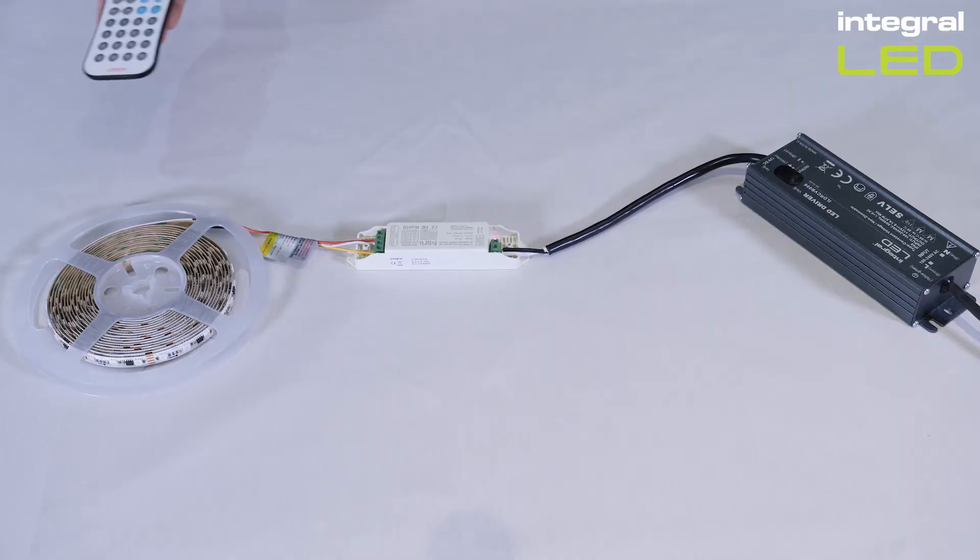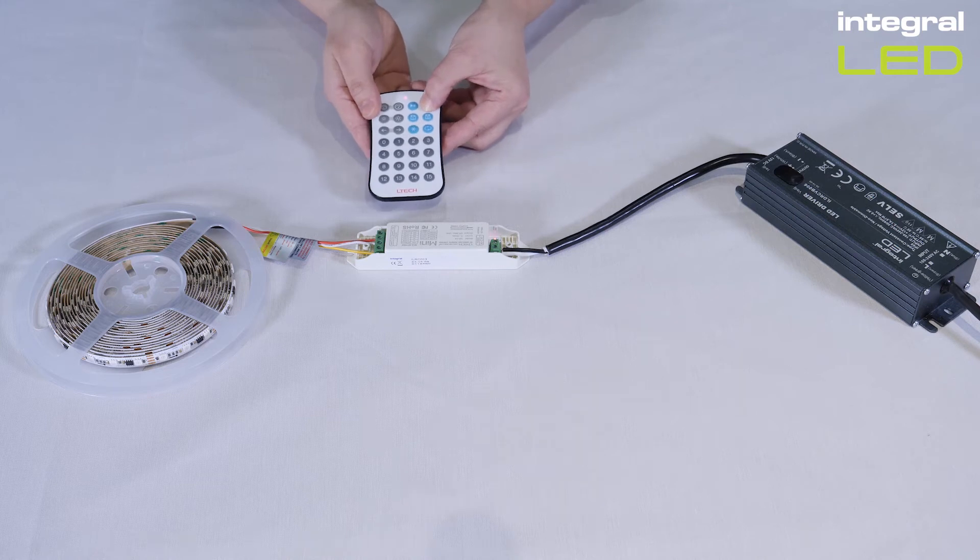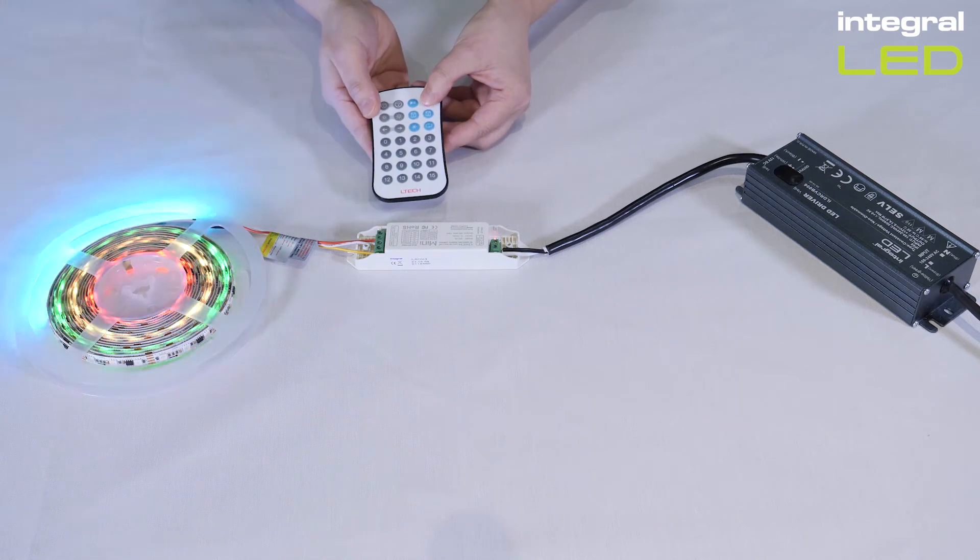Press the power button on the remote control. If the strip turns on, everything is connected correctly and is receiving mains power.